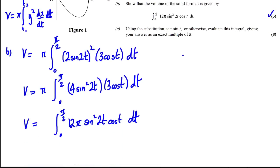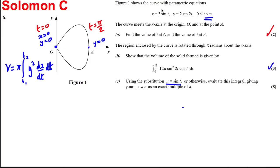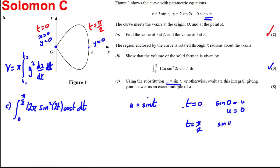Part (c) asks us to use the following substitution to evaluate that integral. We're working out the integral between 0 and π/2 of 12π sin²(2t)cos(t) dt. They ask us to let u equal sin(t). When t equals 0, sin(0) is 0 so u is 0. When t equals π/2, sin(π/2) is 1 so u is 1. Also, du/dt is equal to cos(t), therefore dt is du over cos(t).